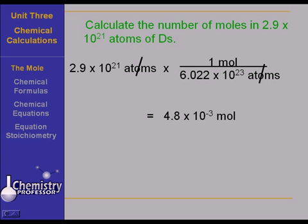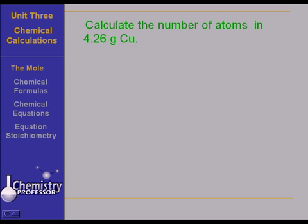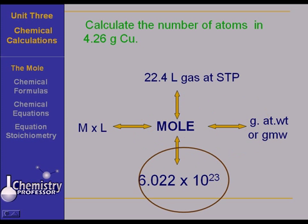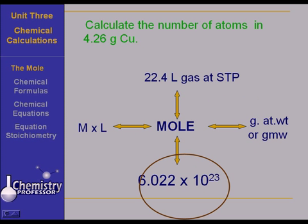Let's make it just a shade more interesting. This time, let's calculate the number of atoms in 4.26 grams of copper. Here's our mole roadmap. We're given 4.26 grams of copper, so we're starting out over here at mass. And you're going to have to involve the gram atomic weight of copper to do this. That's why I've circled this over here.